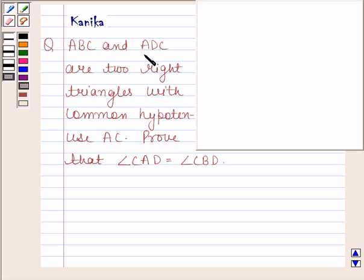The question says ABC and ADC are two right triangles with common hypotenuse AC. Prove that angle CAD is equal to angle CBD. Let us first make a figure of this question.